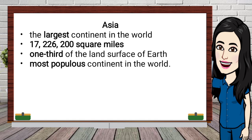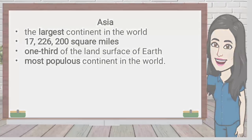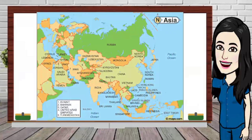Asia is the world's largest and most diverse continent, with a total area of 17,226,200 square miles — roughly one-third of the land surface of the Earth. It is the most populous continent in the world. There are 48 countries in Asia recognized by the United Nations. The largest country by landmass is Russia, even though roughly 40% of the country belongs to the European continent.